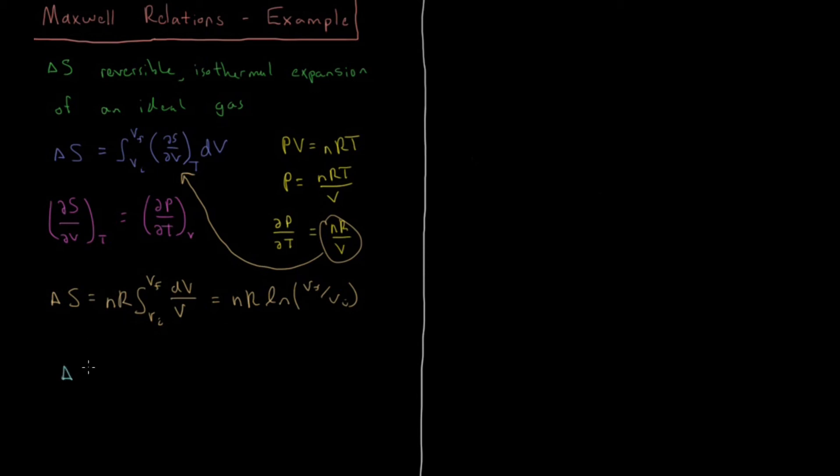So we have our final result that delta S during a reversible isothermal expansion of an ideal gas is the number of moles times the gas constant times log of final volume over initial volume.